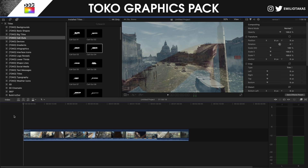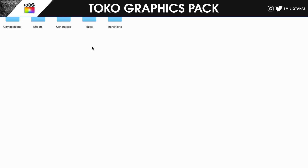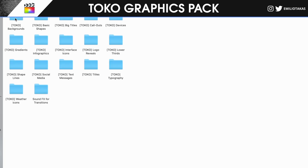In the description of this video you will also find the Venice video if you want to see how Venice looked from my eyes. So without any further ado, let's start with how to install this pack. After you've downloaded it, you will go into Movies, then Motion Templates, and then into Titles. From the pack you downloaded, go into the Toko graphics files.